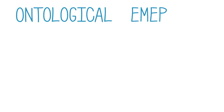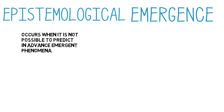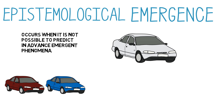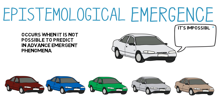Reductionist methods have been remarkably successful in the sciences, in logic, and in computer science, and it is only when they fail that ontological emergence comes into play. Before we discuss ontological emergence, let's consider an easier case: that of epistemological emergence. Epistemological emergence occurs when it is not possible to predict in advance, even in principle, the emergent phenomenon. Suppose that you are in a car trying to exit a cow pasture that is the parking lot for a rock festival. There is only one exit; cars are coming from all directions; people are cutting in.